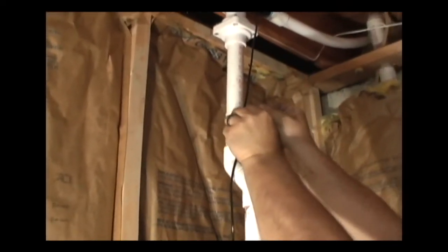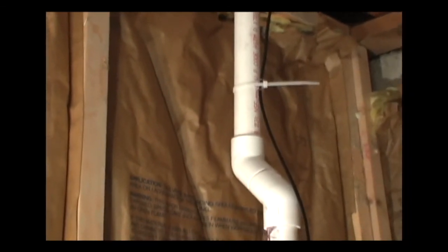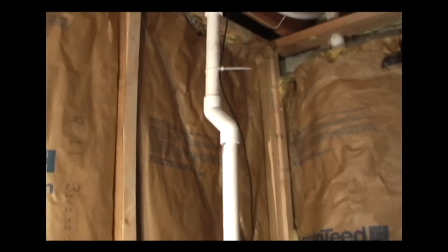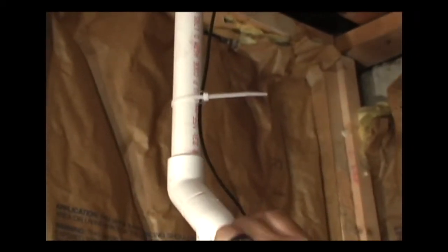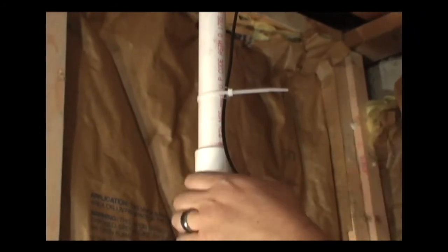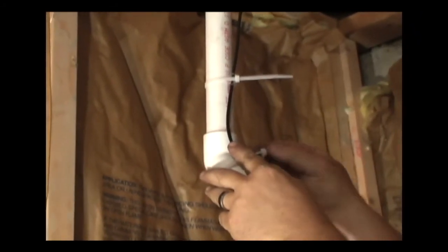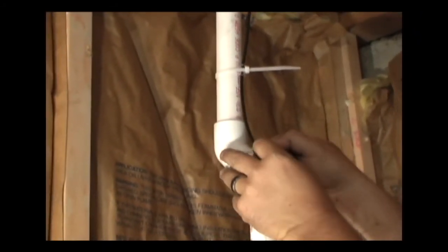As he places cable ties around the transfer tube to hold it neatly in place against the pipe, he slides a clear tube up behind each cable tie to prevent pinching the transfer tube as he tightens the cable tie. The excess cable tie may be cut off to make the job look neat and clean when finished.